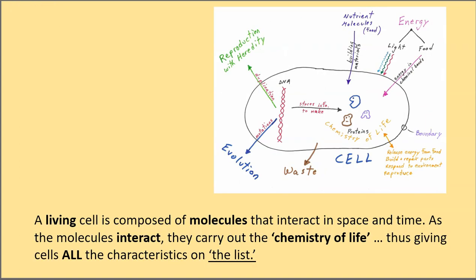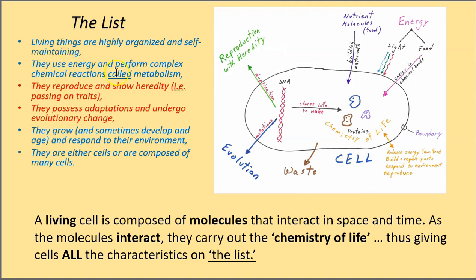So a living cell is composed of molecules that interact in space and time. As the molecules interact, they carry out the chemistry of life, thus giving cells all the characteristics on the list. So you see, if you went through these characteristics again, all of these characteristics are true of this sort of cartoon cell here. In fact, every cell on Earth, we say, is alive because it has all these characteristics.